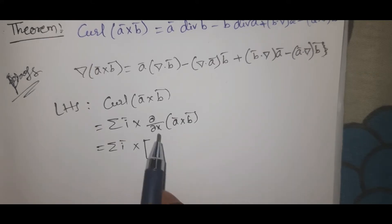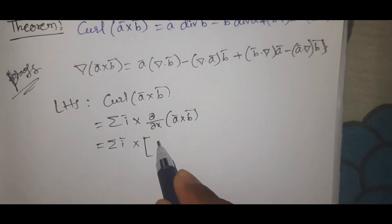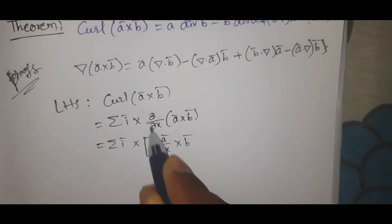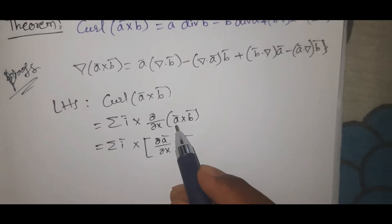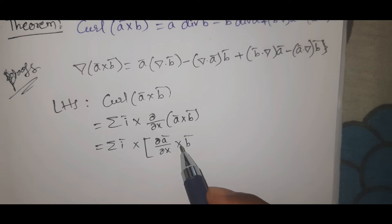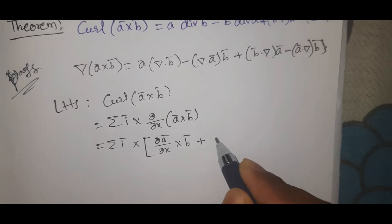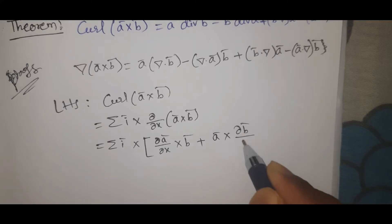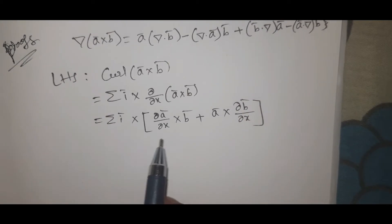We apply ∂/∂x, giving: ∂ā/∂x cross b̄ plus ā cross ∂b̄/∂x. This is the u·v product rule method: u'v + uv'.